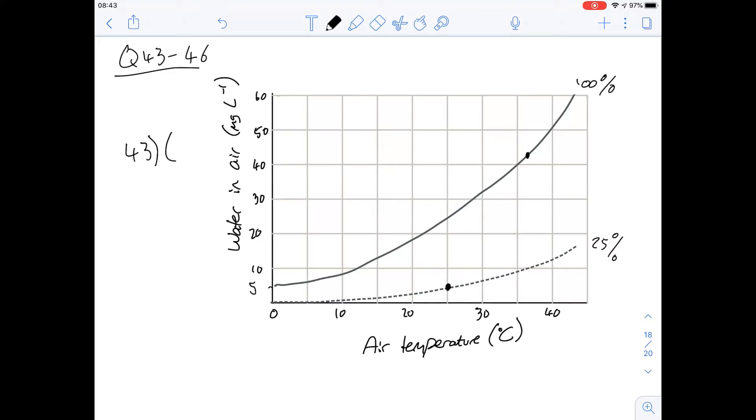Question 44 says which of the following statements is correct. Option A says as the temperature of the ambient air increases its humidity has less effect on the amount of water lost in exhaled air. The amount of water that's lost in exhaled air is mainly prevented by these cooling structures that exist, so the actual temperature of the ambient air itself doesn't necessarily have much of an effect.